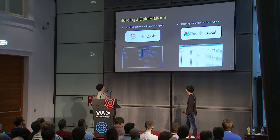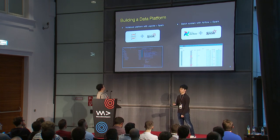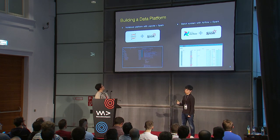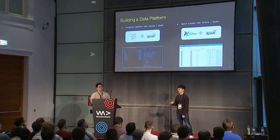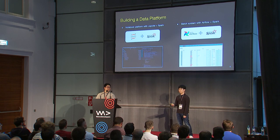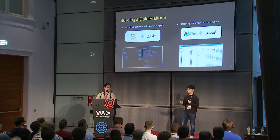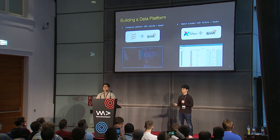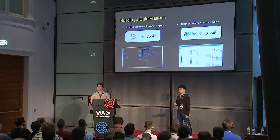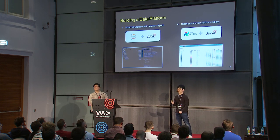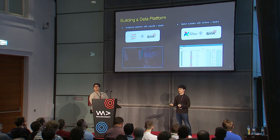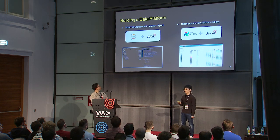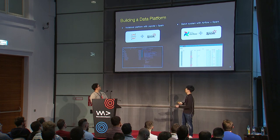Our data platform consists of two main components. One is a notebook platform with Jupyter Notebook and Apache Spark, which provides an interactive development environment for data analysts. By using the notebook and utilities, they can launch their own notebook and Spark resources and easily access Spark through their Python code. The other component is a batch job system with Apache Airflow and Spark. Airflow is a platform to schedule and monitor workflows such as batches or cron jobs. Airflow stores scripts and submits them to Spark clusters.